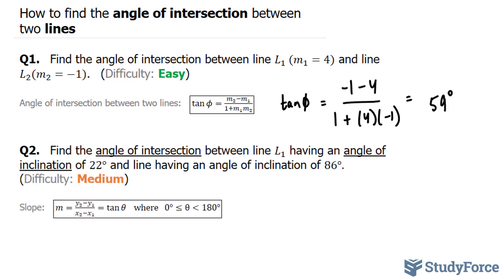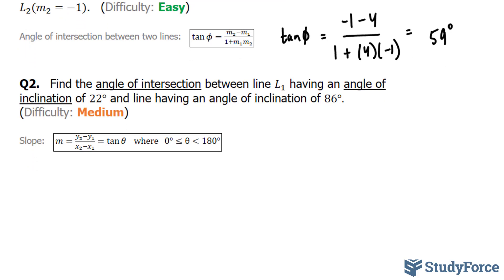In question two, we're asked to find the angle of intersection between line one having an angle of inclination of 22 degrees, and a line having an angle of inclination of 86 degrees.